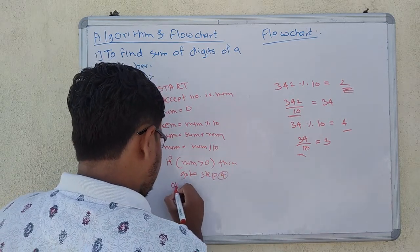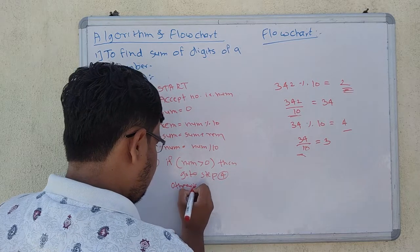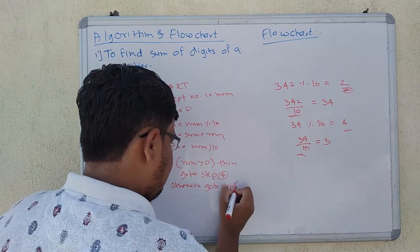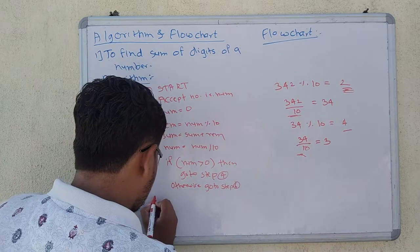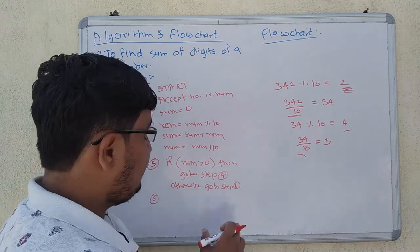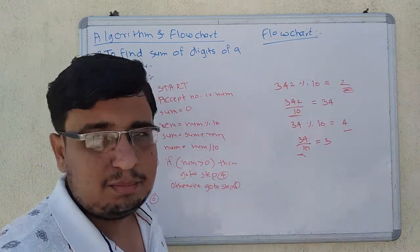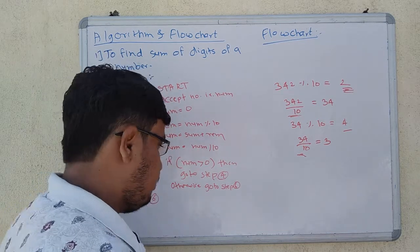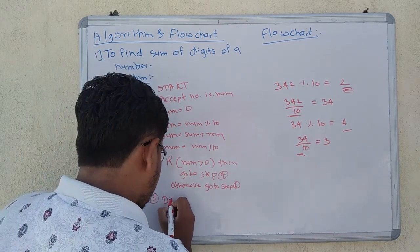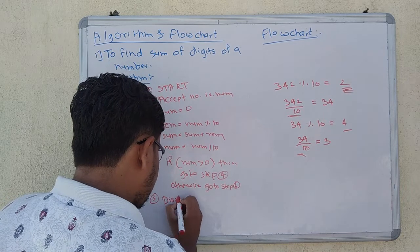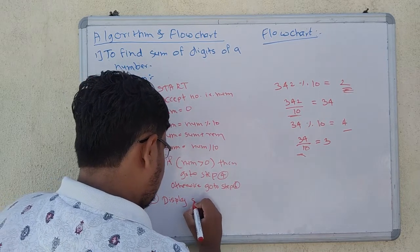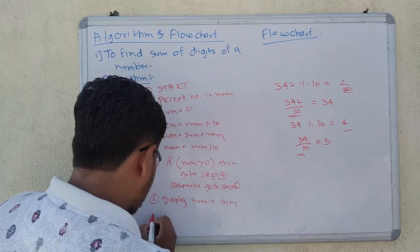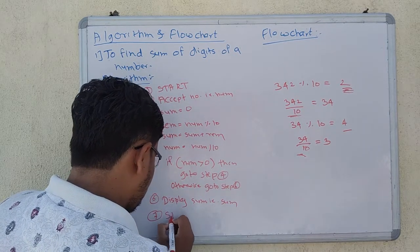Otherwise, go to step 6. Step 6 is: display sum. And the last step, as usual, is Stop.